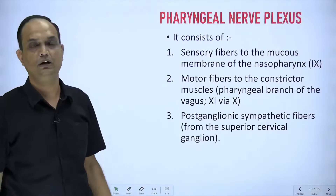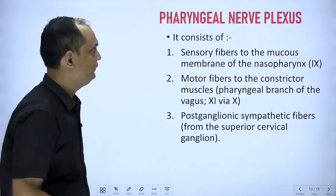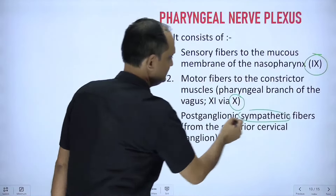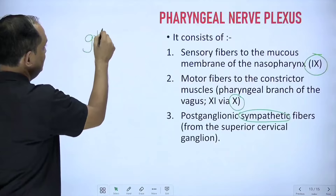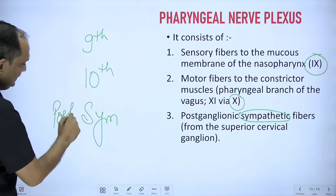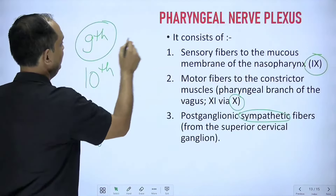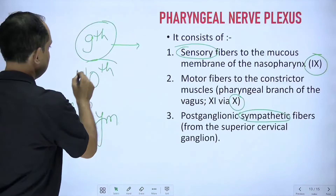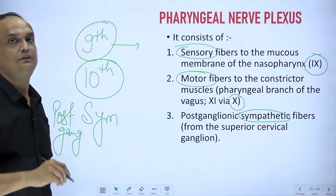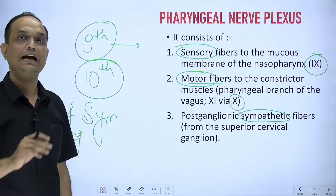The pharyngeal nerve plexus is formed by three sources: the first is the 9th cranial nerve (glossopharyngeal), the second is the 10th cranial nerve (vagus), and the third is sympathetic fibers — which are postganglionic. The branch of the 9th cranial nerve contributing to the pharyngeal plexus is sensory in nature, while the branch from the 10th nerve forming the plexus is motor in nature. All muscles of the pharynx are supplied by the motor fibers of the pharyngeal branch of the 10th cranial nerve, except stylopharyngeus.